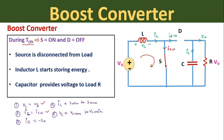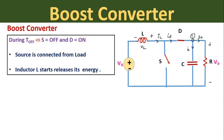Applying KCL at the node gives capacitor current iC equal to minus of load current i0 because both current directions are opposite. Diode current is zero during the ON period. The inductor current iL increases from iL_min to iL_max as it stores energy, and the capacitor voltage decreases from Vc_max to Vc_min as it supplies energy to the load.